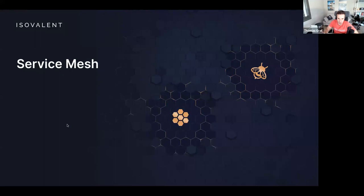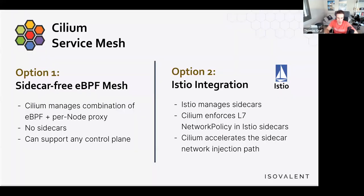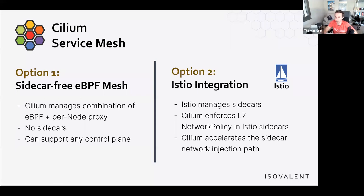Switching gears to service mesh: 1.12 is the first release with a new sidecar-free data path. Previously, we offered option two — the Istio integration — where Cilium was made aware of an existing Istio installation, providing additional functionality like removing unencrypted traffic and enforcing layer 7 policies via Istio's sidecar. That continues to be fully supported. With 1.12, we've added an option to run a sidecar-free data path.